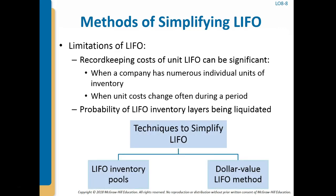One problem with unit LIFO is that it can be very costly to implement. It requires records of each unit of inventory. The cost of maintaining these records can be significant, particularly when a company has numerous individual units of inventory and when unit costs change often during a period. A second disadvantage of unit LIFO is the possibility that LIFO layers will be liquidated if the quantity of a particular inventory declines below its beginning balance. Even if a company's total inventory quantity is stable or increasing, if the quantity of any particular inventory unit declines, unit LIFO will liquidate all or a portion of a LIFO layer. When inventory quantity declines in a period of rising costs, non-current lower costs will be included in cost of goods sold, resulting in LIFO liquidation profit.